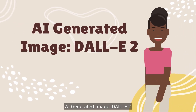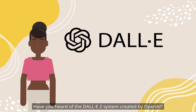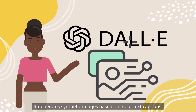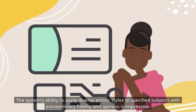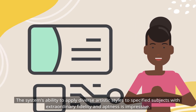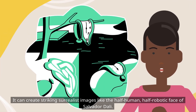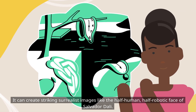Have you heard of the DALL-E 2 system created by OpenAI? It generates synthetic images based on input text captions. The system's ability to apply diverse artistic styles to specified subjects with extraordinary fidelity and aptness is impressive. It can create striking surrealist images like the half-human, half-robotic face of Salvador Dali.